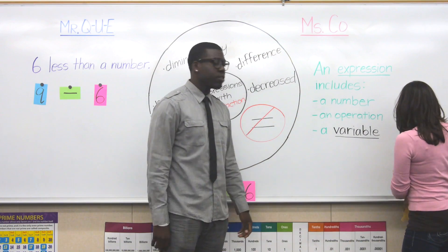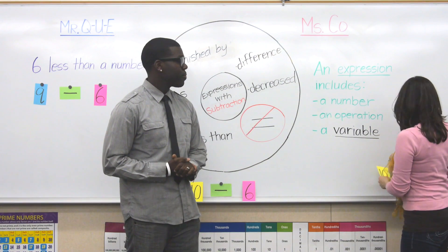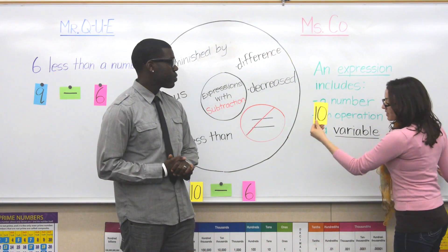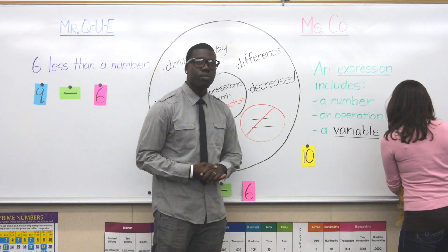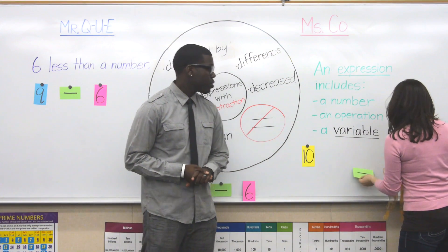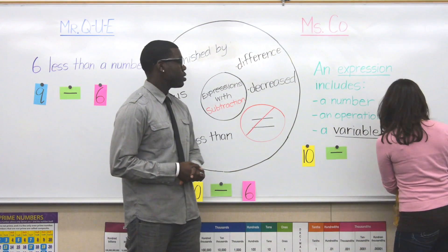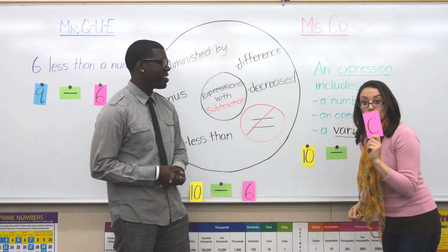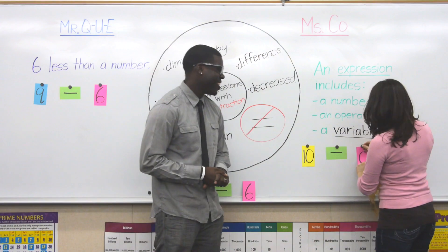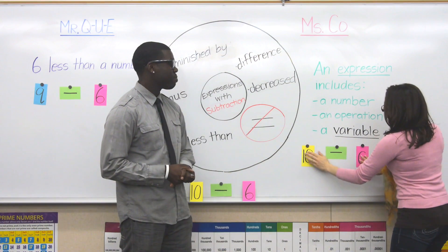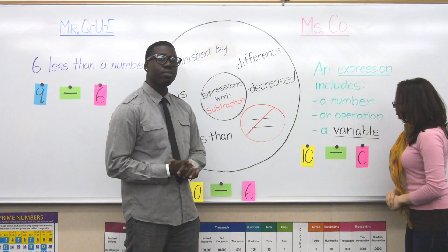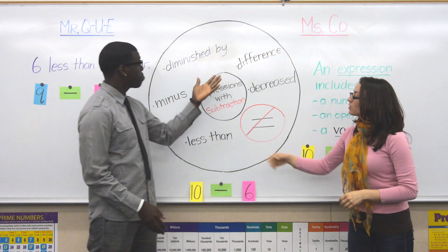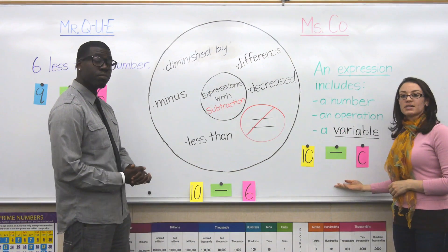Alright, so now that we know how to use 'less than,' we're going to give you a new expression. We're going to start with the number ten, and we're going to use subtraction. Our variable is going to be C, because I'm Miss Co. Now, turn to your partner or tell your teacher how many different keywords you can use to write this expression.